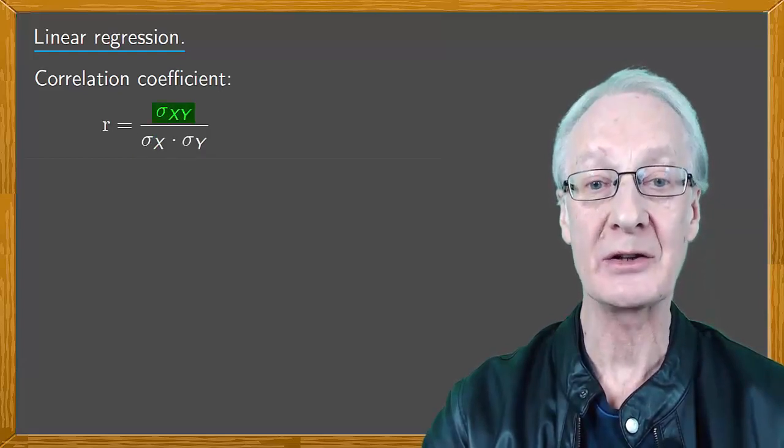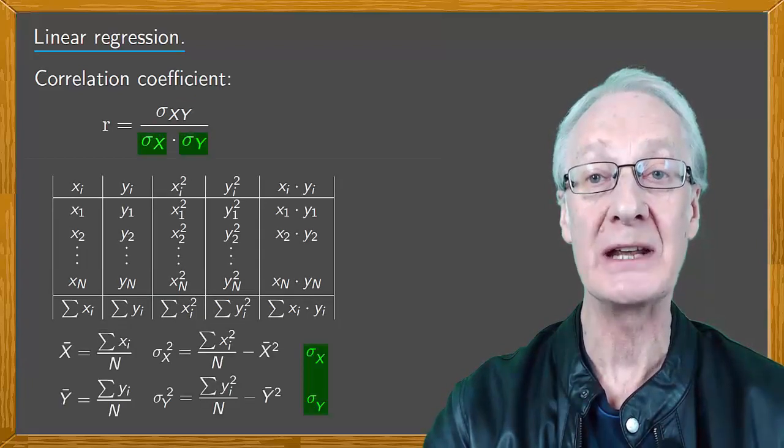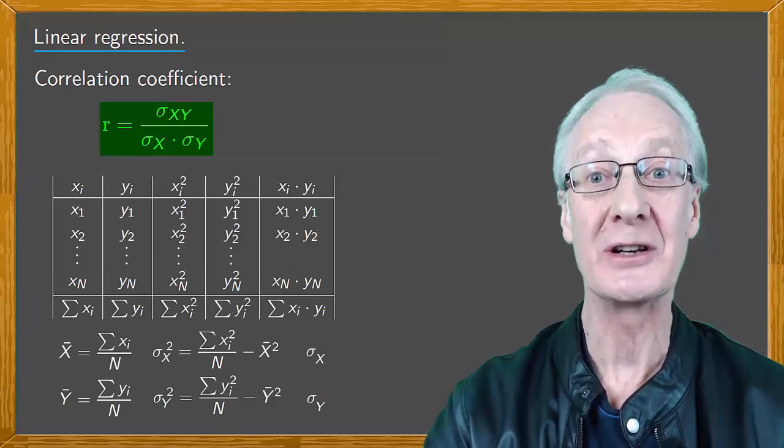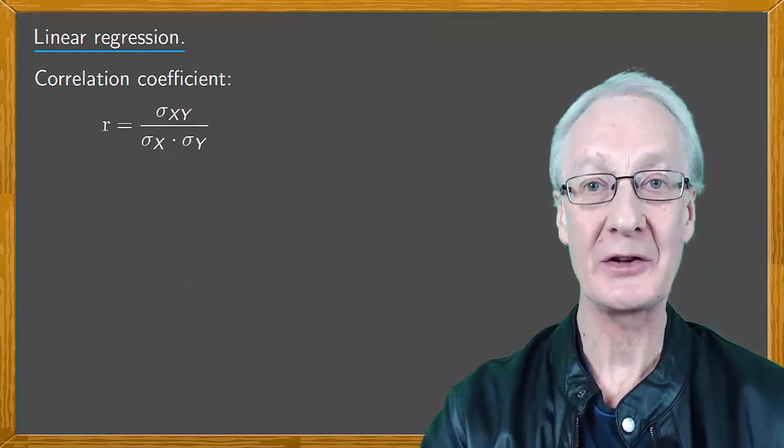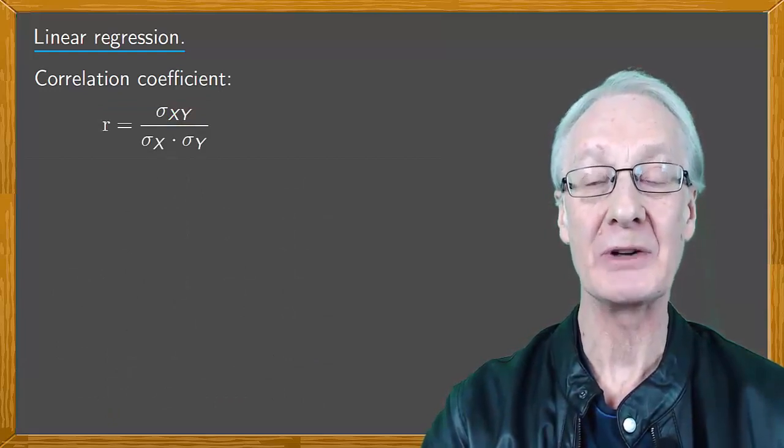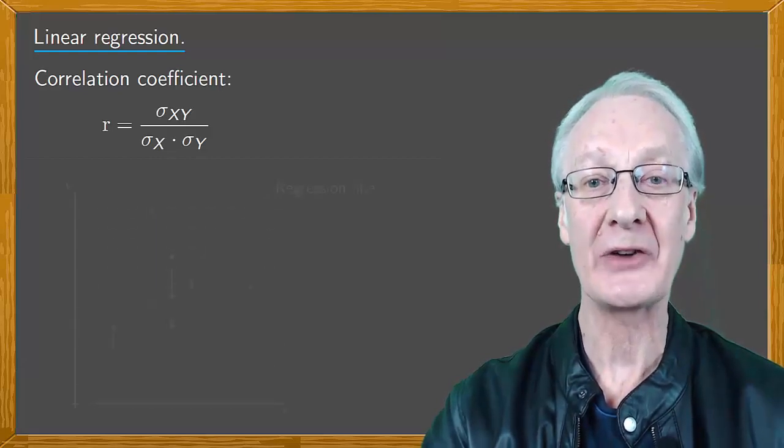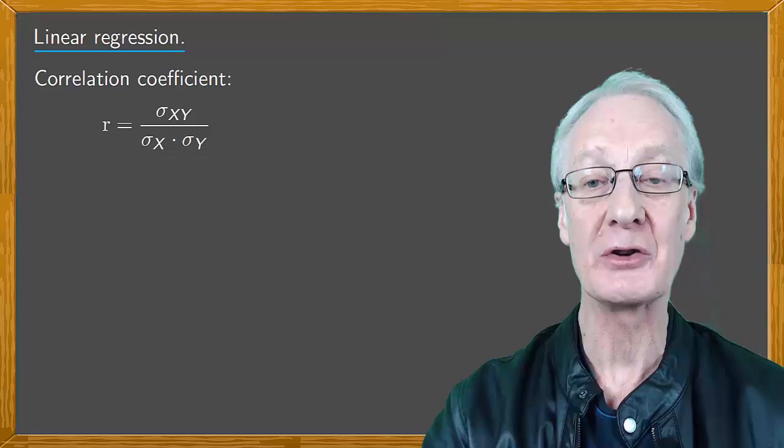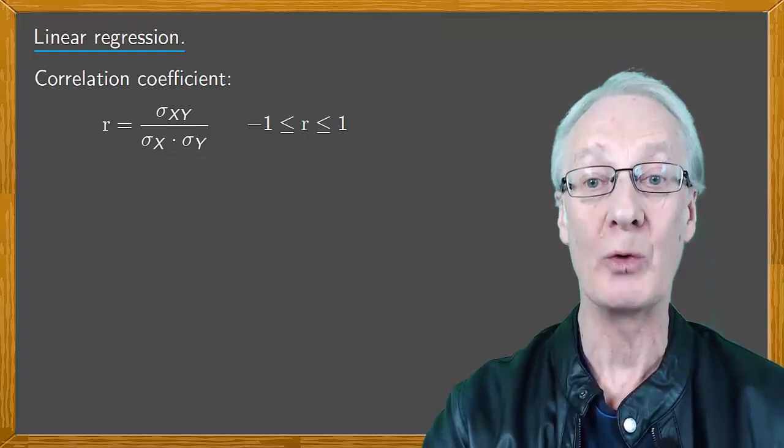Remember that we obtained the covariance from the previous table, and from this we can also obtain the standard deviations, and from all this, the value of the correlation coefficient. Not only will the correlation coefficient, like the covariance, allow us to see the relationship between the variables X and Y, it'll also tell us how well the linear regression line fits the cloud of data points.